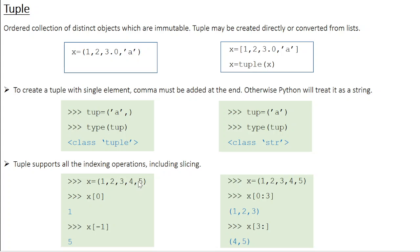You can also access the last element using x[-1], because each element has both a positive and a negative index. You can extract a part of the tuple using slicing. When you say x[0:3], it extracts elements from index 0 up to index 3 minus 1, which is index 2 — so the result is the tuple (1, 2, 3). Similarly, when you say x[3:], if you don't mention an ending index, Python defaults to the last element. So it starts from the element at index 3, which is 4, all the way to the last element 5, giving you the tuple (4, 5).